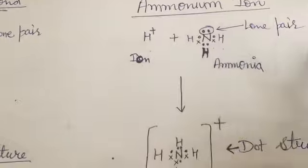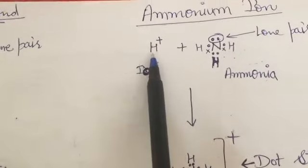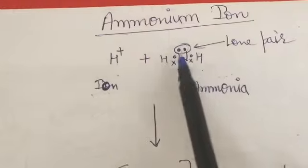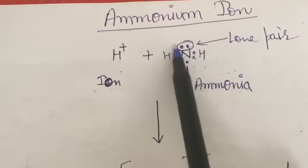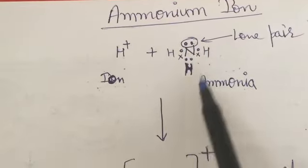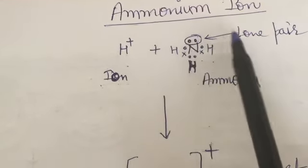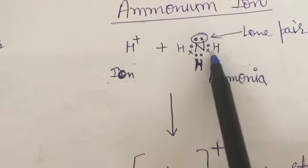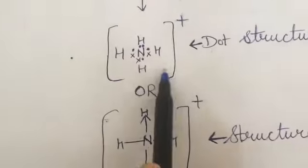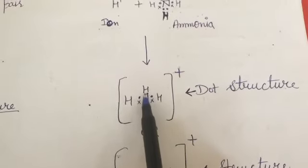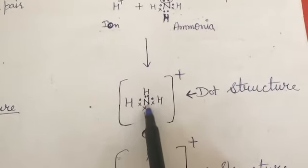There are two conditions for a coordinate bond: one atom must have a shortage of electrons — it is called an ion — and another atom must have a lone pair. This atom belongs to a covalent compound. The lone pair is not shared with any of the atoms. This is the dot structure before combination.